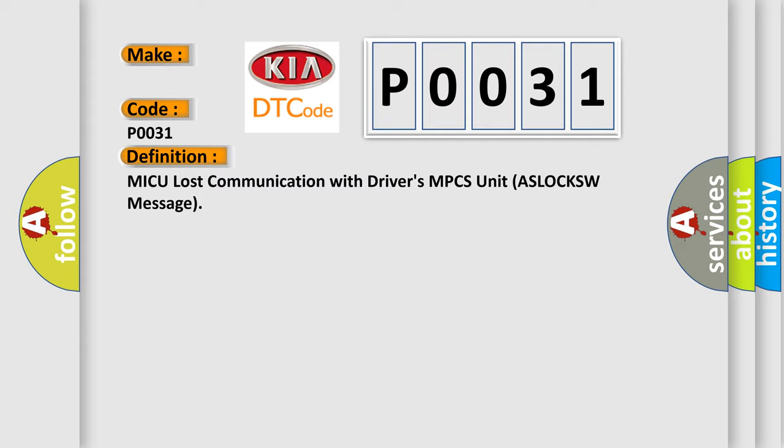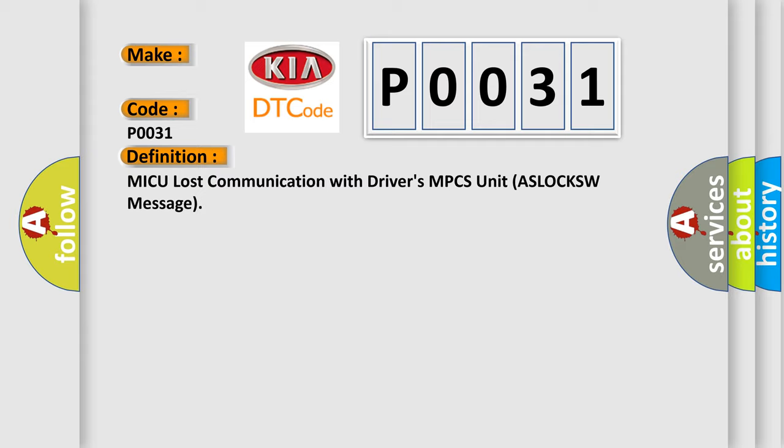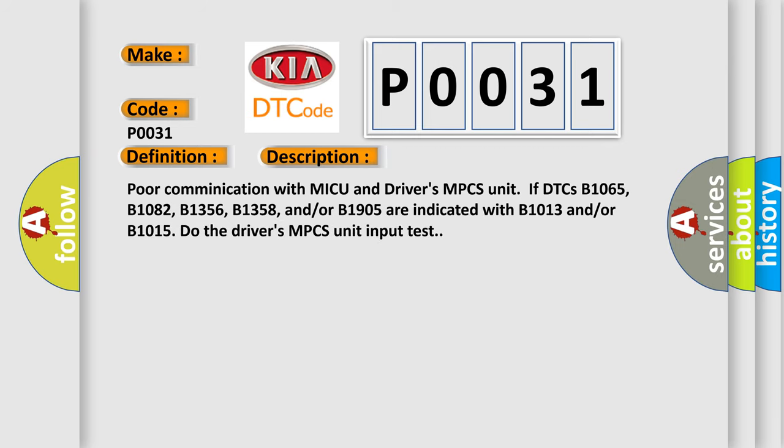Here is a short description of this DTC code. Poor communication with MICU and driver's MPCS unit if DTCs B1065, B1082, B1356, B1358, and/or B1905 are indicated with B1013 and/or B1015 to the driver's MPCS unit input test.